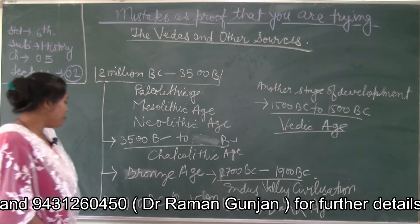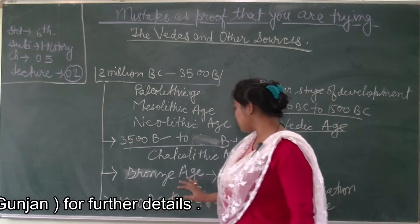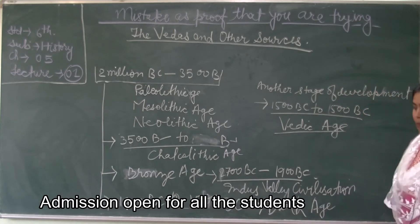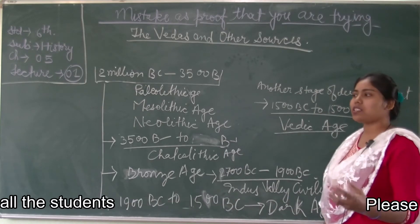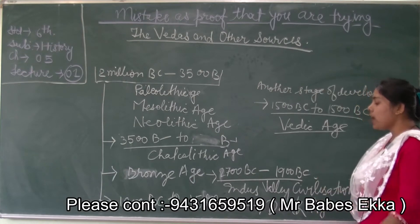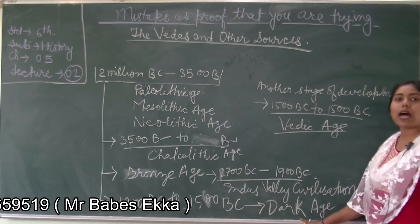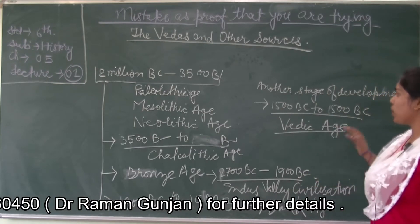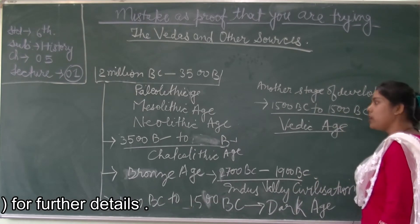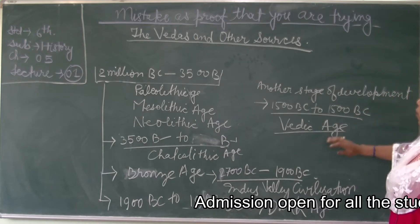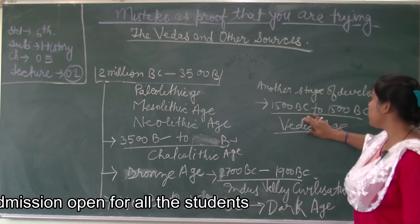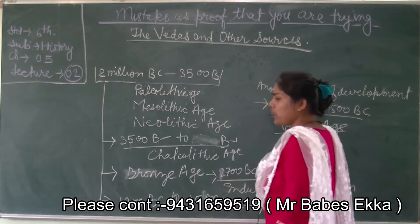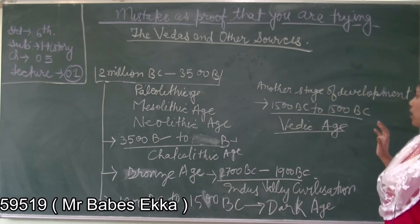From 1900 BC to 1500 BC, archaeologists have not found any type of activity or information, which is why this period is called the Dark Age. After that, people came into another stage of development — the Vedic Age, which started from 1500 BC to 500 BC. In the Vedic Age, people learned about writing.